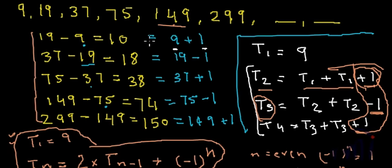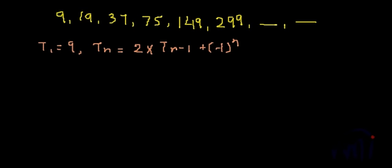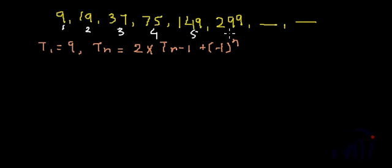I have erased everything and noted down the series and the formula we recently found. Let me number the terms: this is our first term, second term, third term, fourth, fifth, sixth. The seventh and eighth terms are what we need to find.